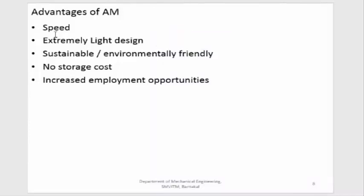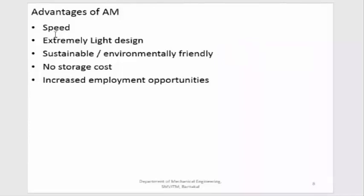The next advantage is that additive manufacturing is sustainable and environmentally friendly, since less material is consumed, there is less scrap, and no lubricants or cutting fluids are used. The next advantage is no storage cost, mainly applicable for spare parts. For example, if a spare part is needed in ABS material, you don't need to produce and store it for months. With a 3D printer, when a customer requests a component, you can print it immediately. You only store the raw material in standard form and create the component as and when required, minimizing storage costs.